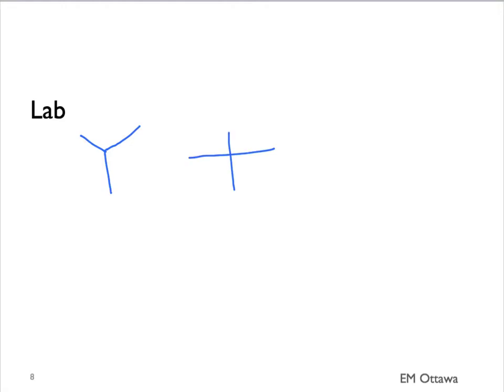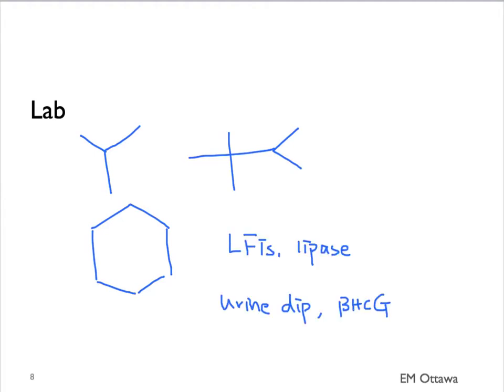In terms of specific labs, I'll refer you to the previous video for the details. They can include routine labs such as CBC, electrolytes, and kidney functions. Depending on the location of the pain and our clinical suspicion, other tests such as liver markers and lipase can be added. In certain cases, a urine dip and a beta-HCG is also necessary.